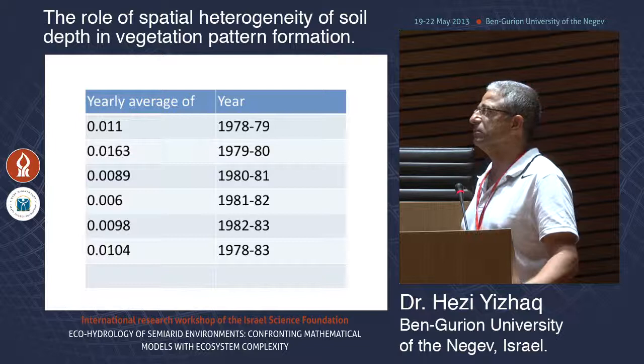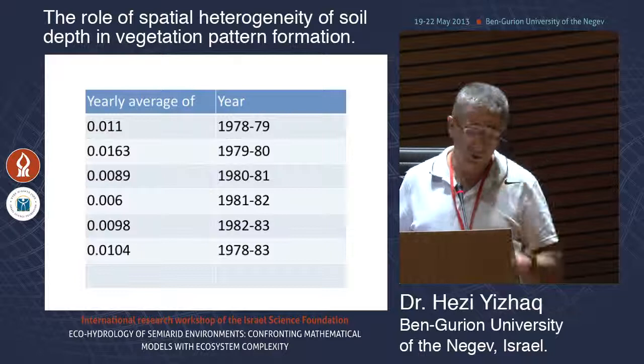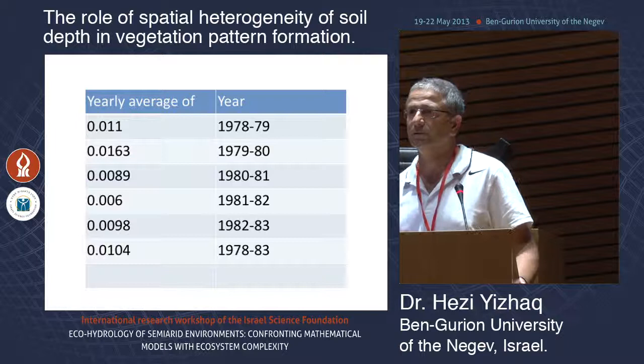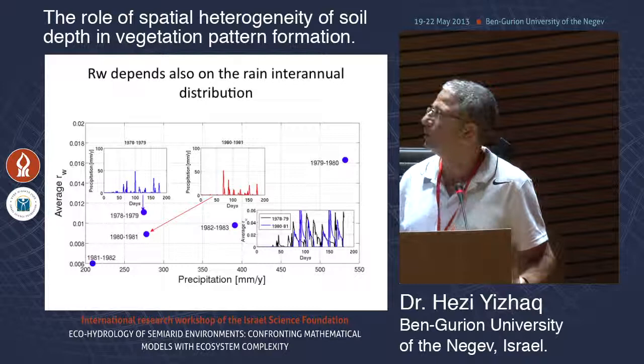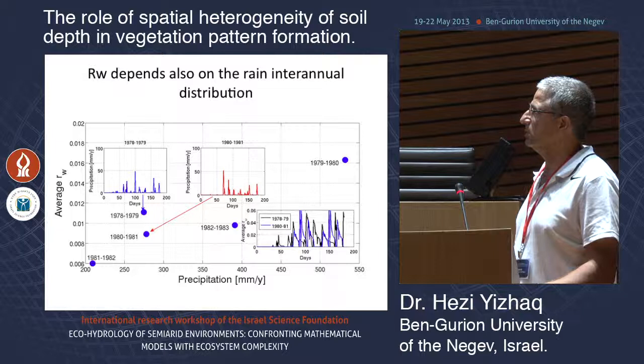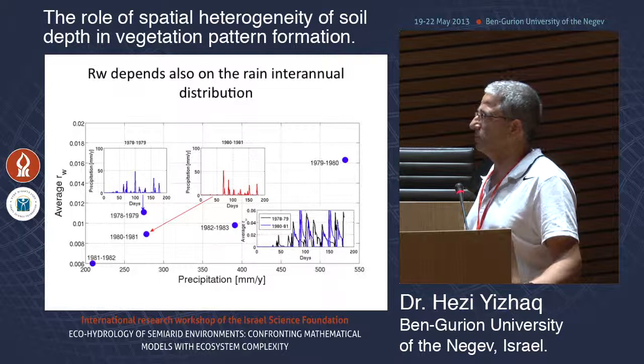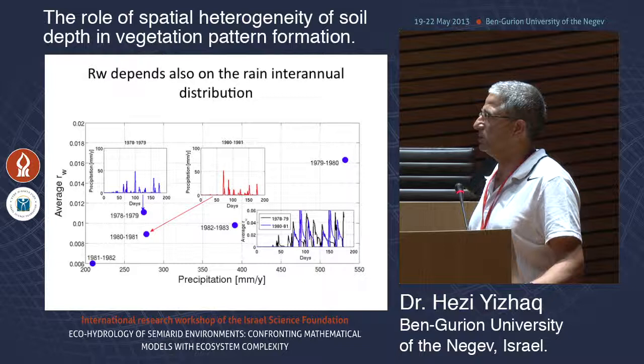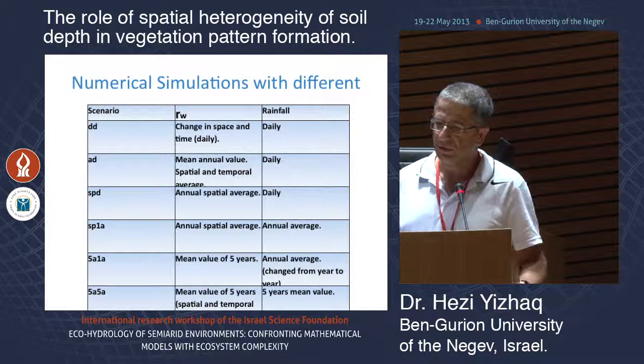The average values of Rw are quite small because of the seal layer — much smaller than the values that Meron and Sonia use in the model. The average Rw also changes because of the interannual distribution of rain. Two years with the same precipitation can have quite different average Rw values.